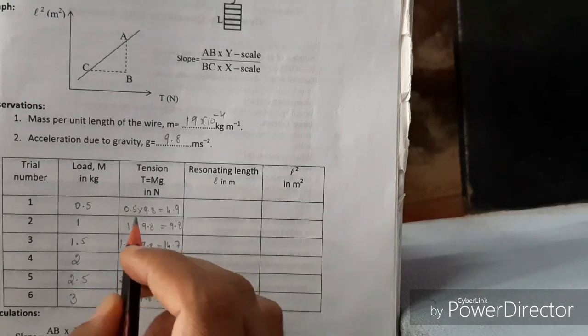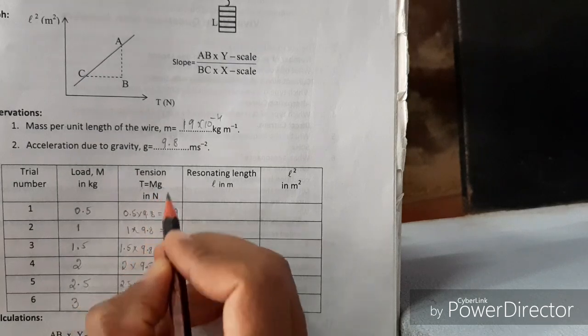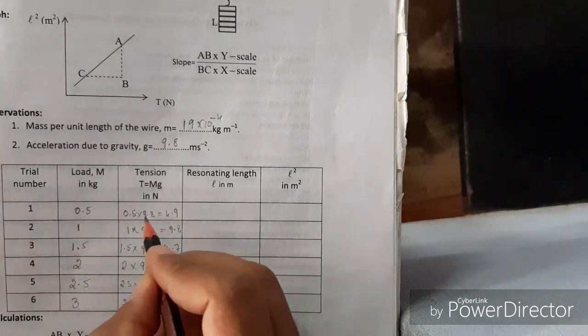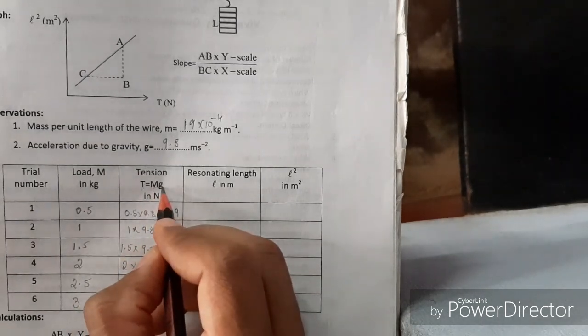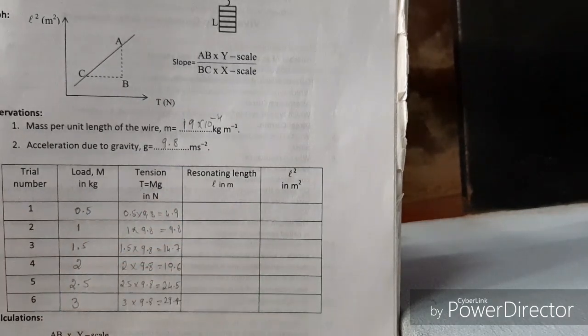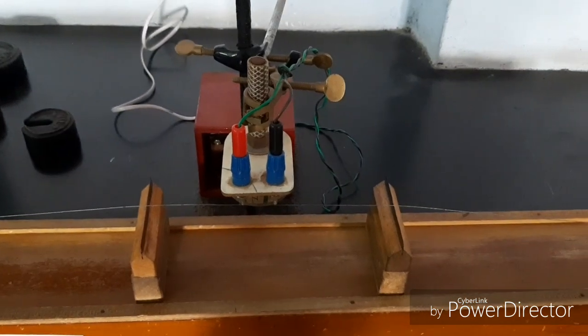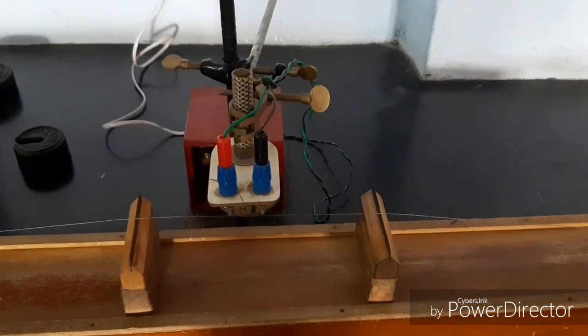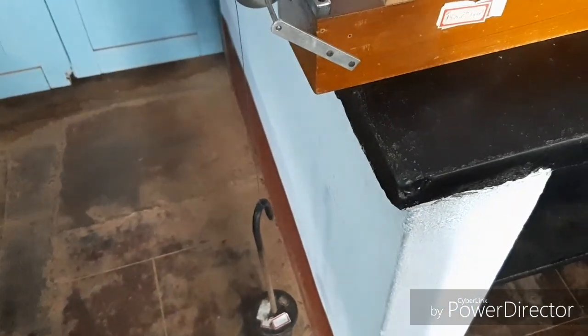Applied tension is calculated using the formula T = M × g for every trial. 9.8 is constant, that is g, and M is taken according to the first column. Now we will see how to find resonating length. For first trial I have to use 0.5 kg as my load.